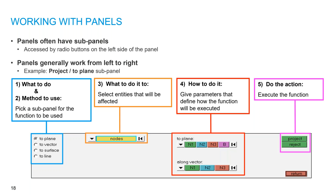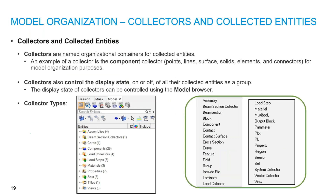Next is model organization — this covers collectors and collected entities. There is the assembly collector, component collector, contact collector, and beam section collector, among many other collectors. This is the model organization toolbar.